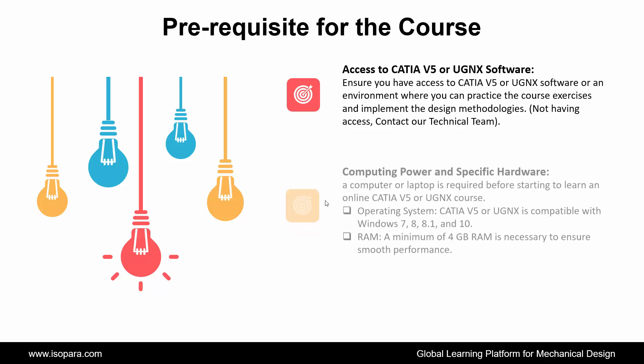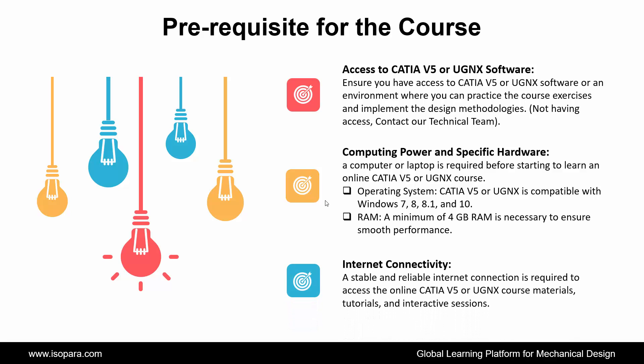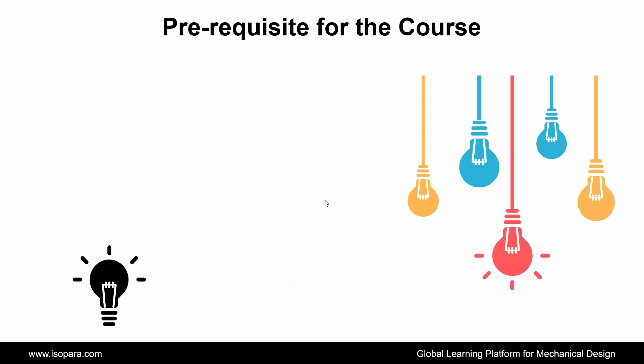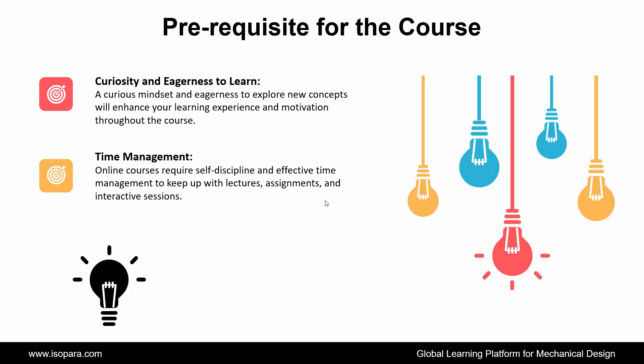Next is Computing Power and Specific Hardware: a computer or laptop is required. The operating system should be compatible with Windows 7, 8, 8.1, and 10, and a minimum of 4 GB RAM is necessary to ensure smooth performance. Next is Internet Connectivity: a stable and reliable internet connection is required to access course materials, tutorials, and interactive sessions. Next is Curiosity and Eagerness to Learn: a curious mindset and eagerness to explore new concepts will enhance your learning experience throughout the course. And the last prerequisite is Time Management: online courses require self-discipline and effective time management to keep up with lectures, assignments, and interactive sessions.